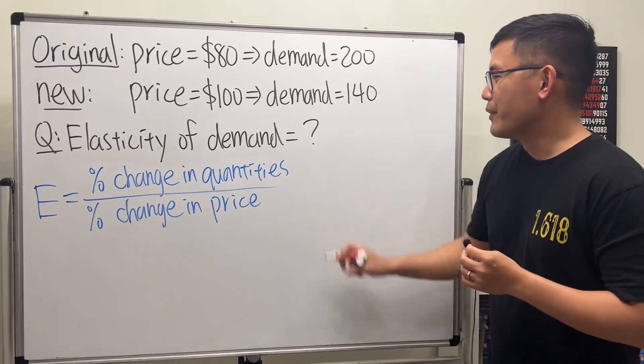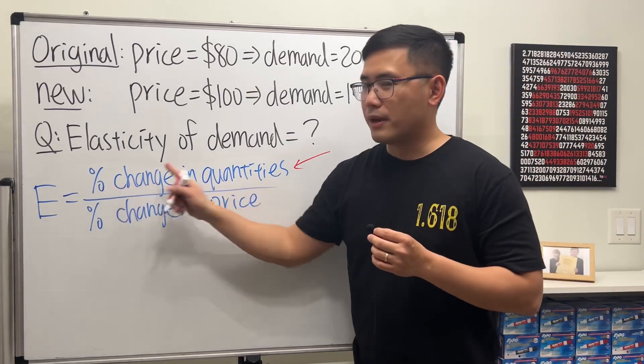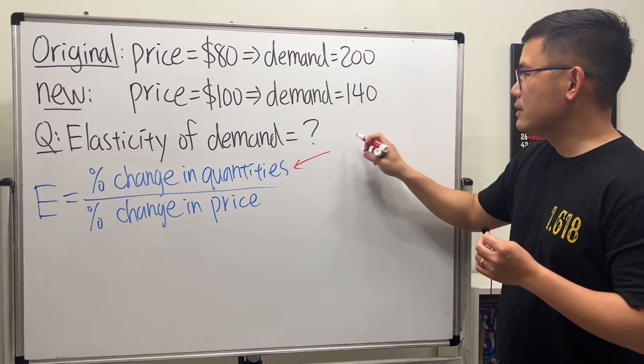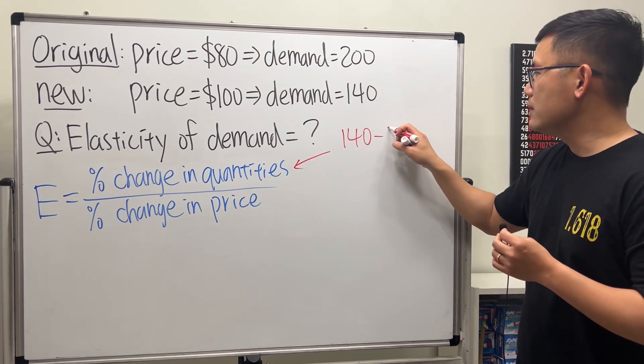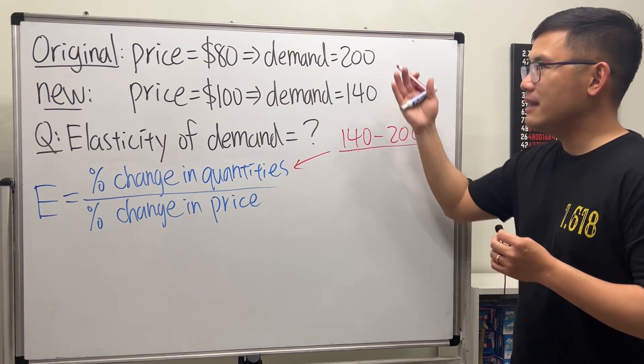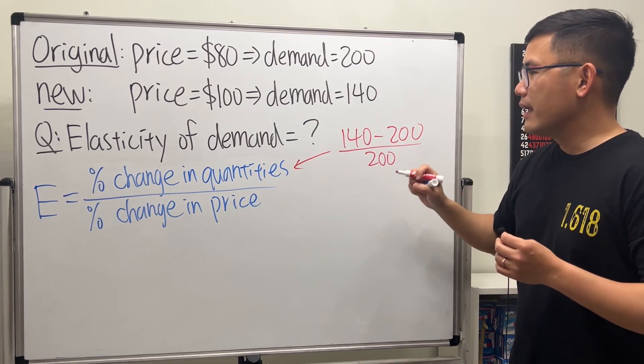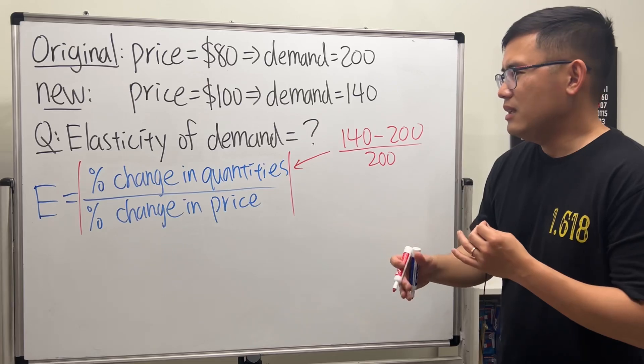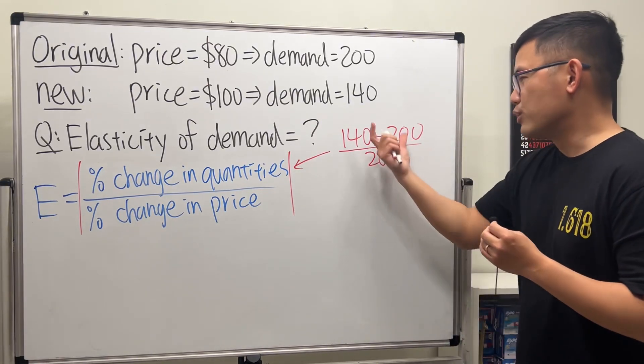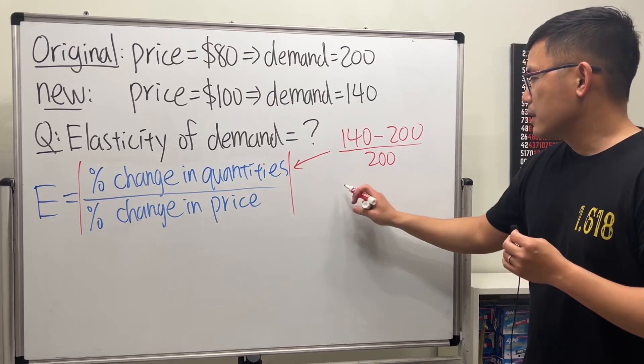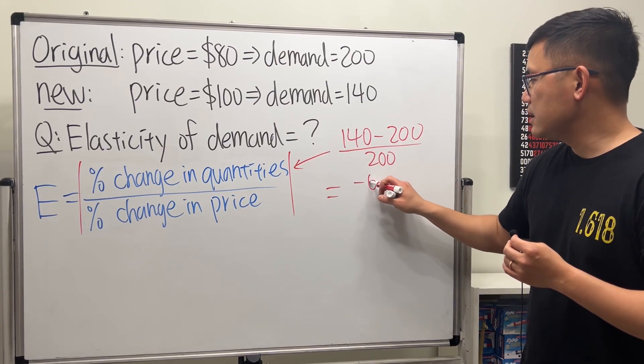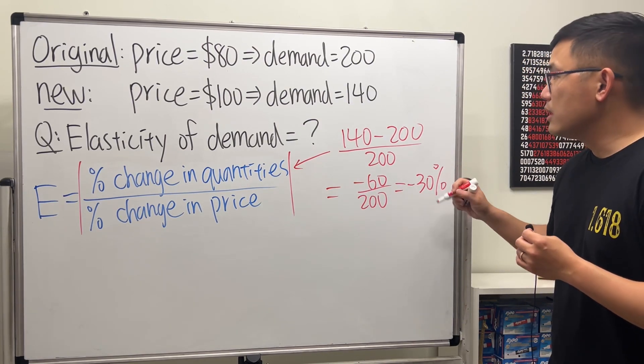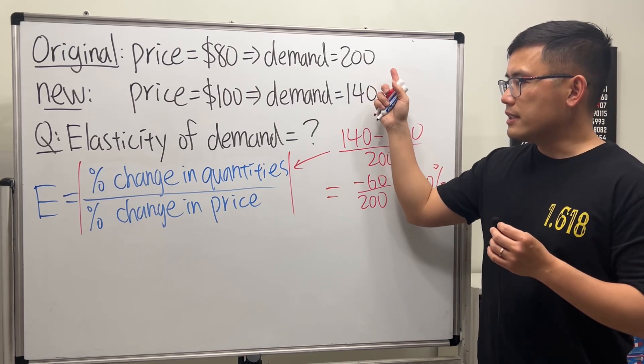Now let's do the math. For the top right here, to find the percentage change we always do the new minus the old. So this is 140 minus the old or the original, divided by the original. Right here the capital E, you just want to look at it as a positive number. If you work this out, this is going to be negative 60 over 200.